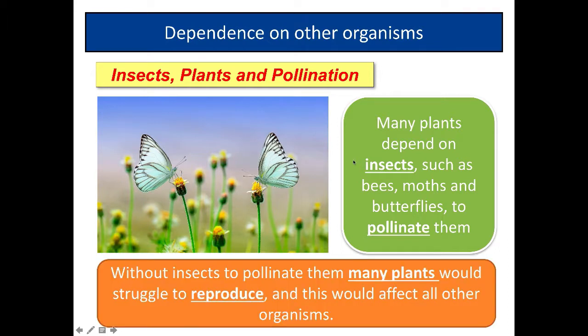Without insects to pollinate them, many plants would struggle to reproduce, and this would affect all other organisms. Insects are important for pollination, and some birds carry out pollination too. Animals also disperse seeds for plants, so everything is interdependent.